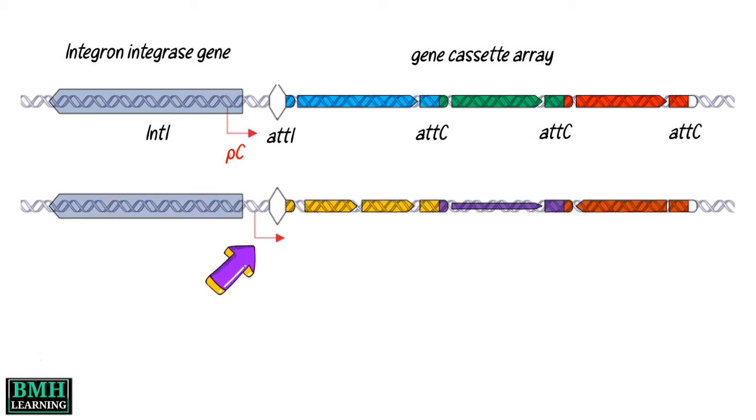In some integrons, Pc lies between IntI and attI. Cassettes with two ORFs, no ORF, or an ORF in the reverse direction are known.